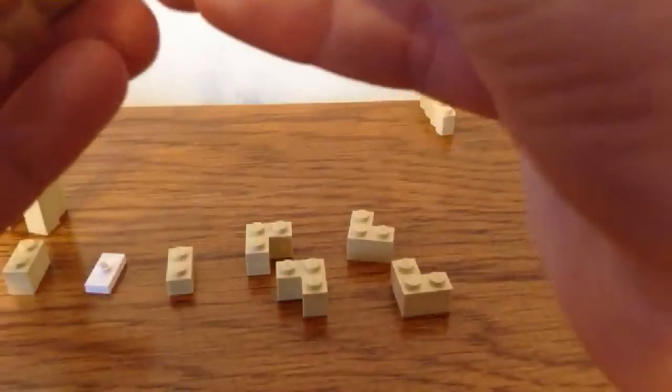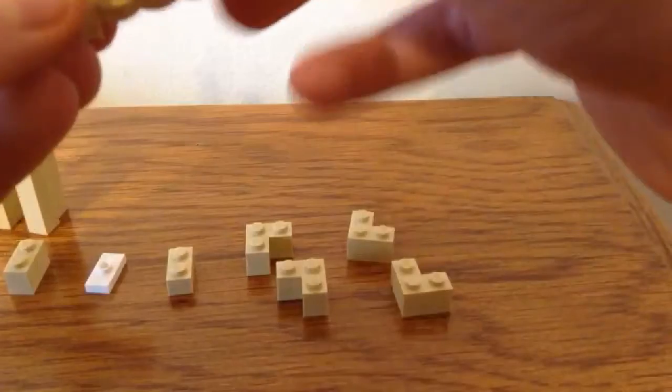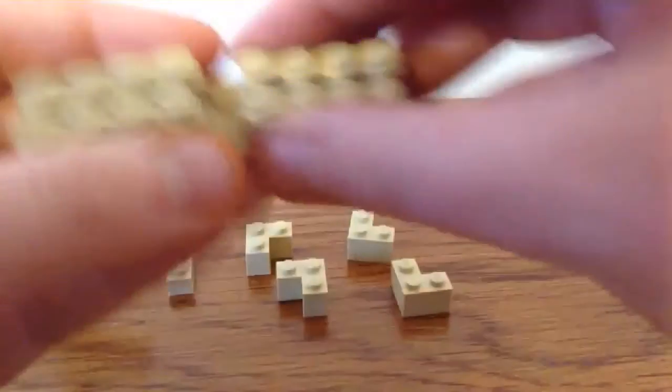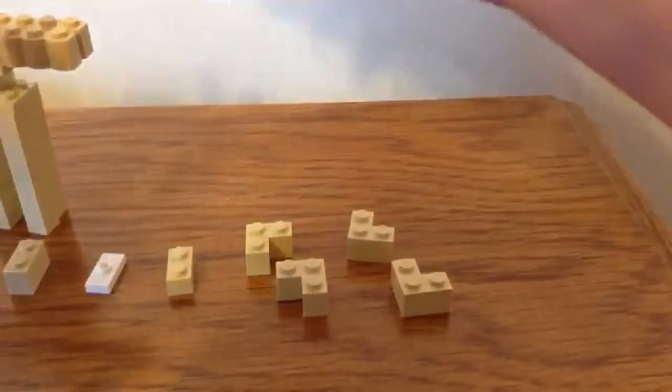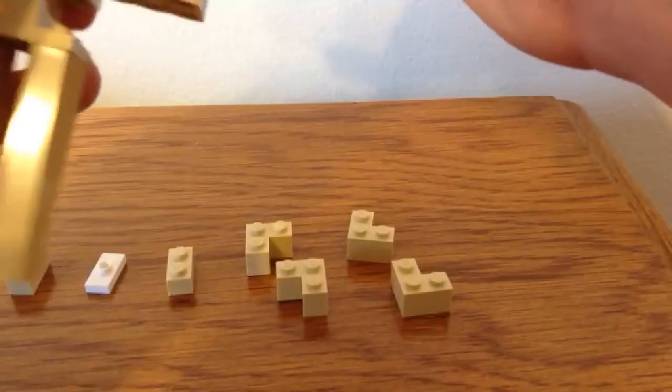Same thing as before with the 2x3 plate and then four 1x4 tan bricks. Put one on each corner like that. And then you'll put it right on top of Slim here right in the middle.